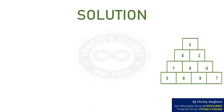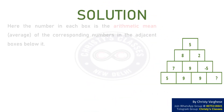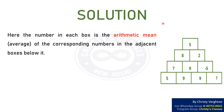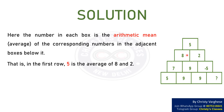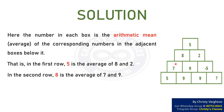Solution: The number in each box is the arithmetic mean, or average, of the corresponding numbers in the adjacent boxes below it. That is, in the first row, 5 is the average of 8 and 2. In the second row, 8 is the average of 7 and 9, and 2 is the average of 9 and minus 5.